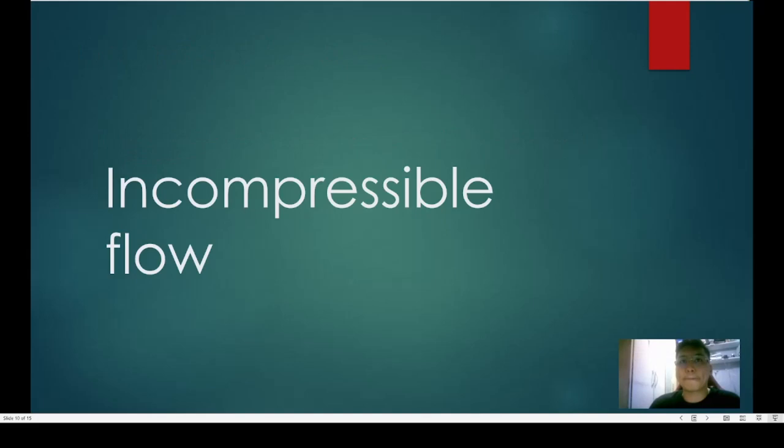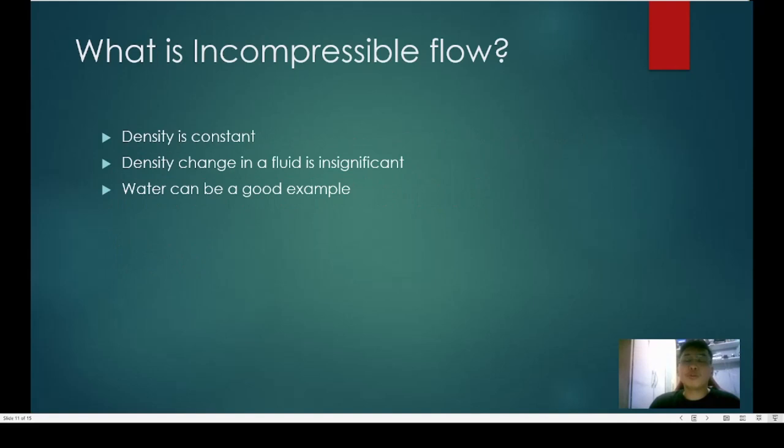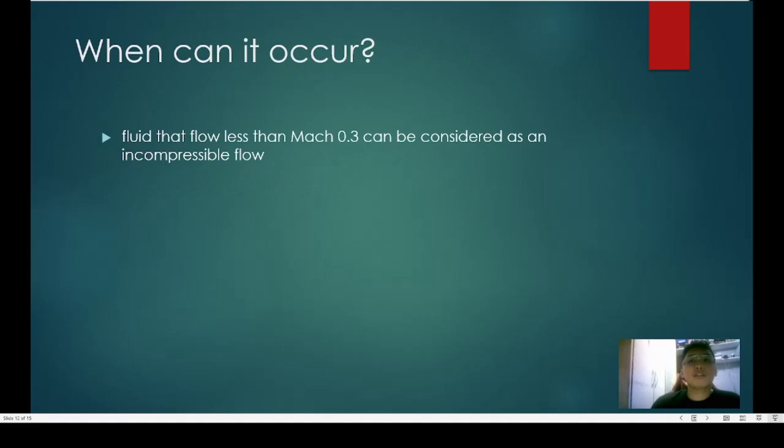When does it occur? Compressible flow happens when the fluid density varies with its pressure. Next is incompressible flow. So unlike compressible flow, incompressible flow has a constant density. Density change in a fluid is insignificant and water can be a good example. In the piston example, with water inside, it can't be compressed. If there is a chance that you can compress it, the result would be so little that it is often disregarded.